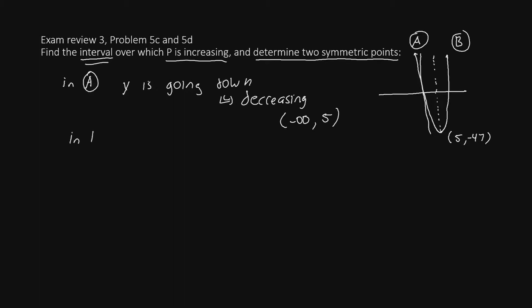However in region B, starting from this 5 and going on to infinity, y is going upward. And it's going to keep on going upward all the way up to infinity. So in piece B, y is increasing. And we'll say the increasing interval is 5 to infinity. Notice we do not use brackets here. We just use parentheses.